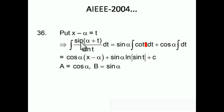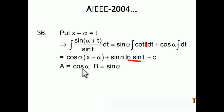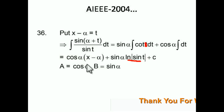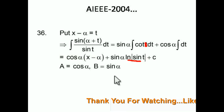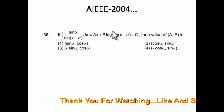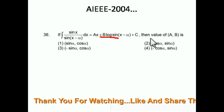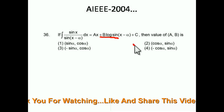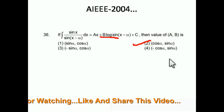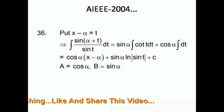The integration of cot t is log|sin t|, and t = x − α. So we get: sin α·log|sin(x − α)| + cos α·(x − α) + C. Comparing with ax + b·log|sin(x − α)| + C, we get a = cos α and b = sin α. Option number 2 is the right answer.